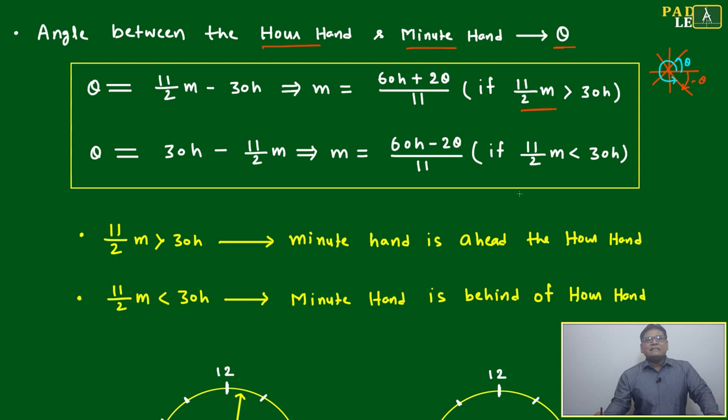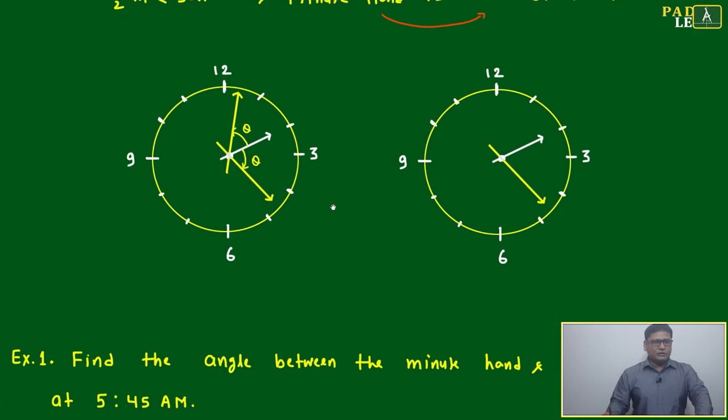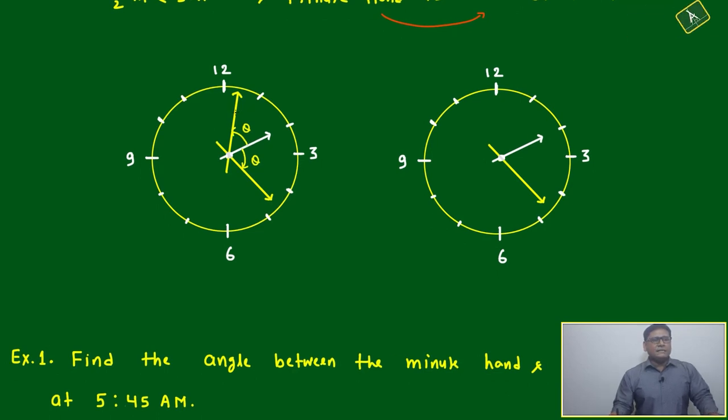When are these conditions applied? By common sense: 11 by 2 m greater than 30 h when the minute hand is ahead of the hour hand—meaning it already surpassed. This will be less when the minute hand is behind the hour hand. We can look at it pictographically. This is theta: one case is when we measure like this, your minute hand is behind the hour hand.